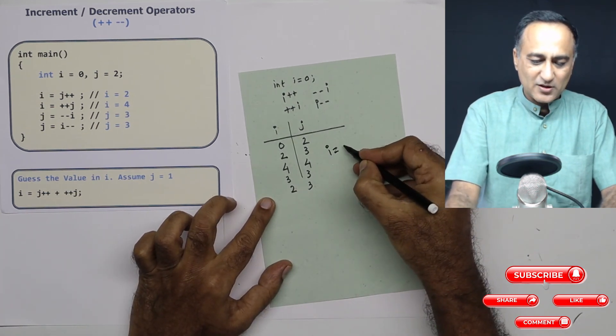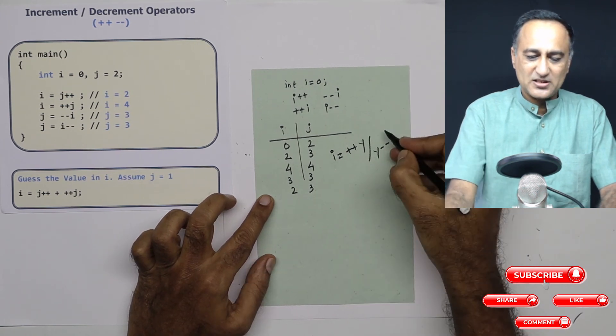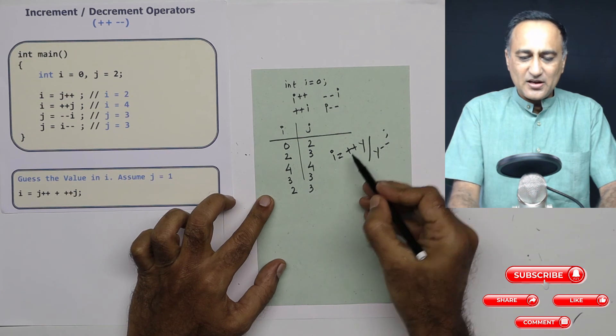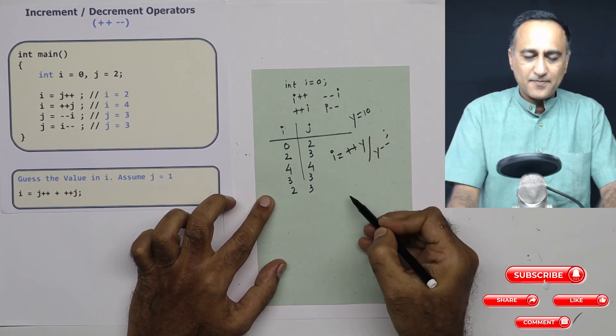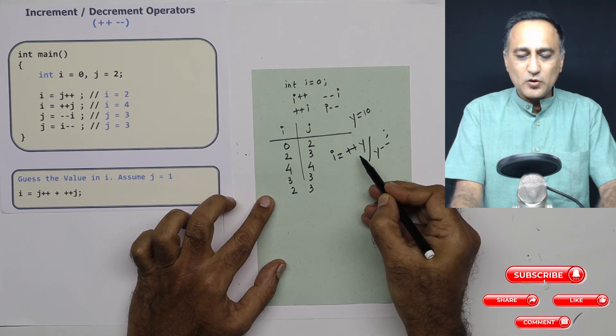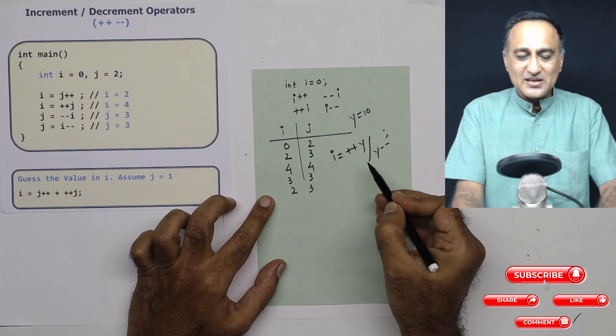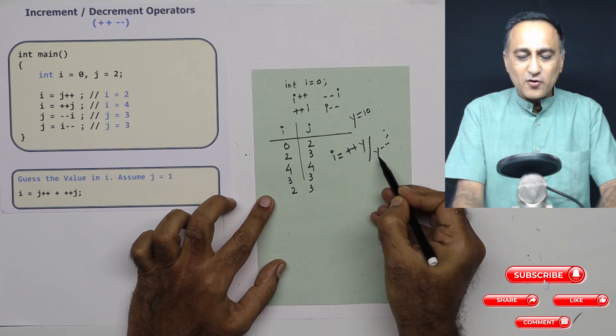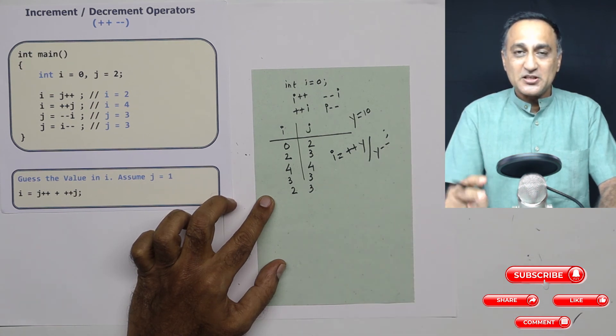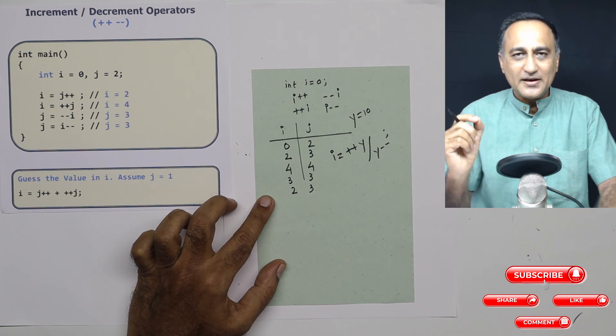Suppose I say i equals ++y and y--. Here, assume y was 10. You cannot be sure what the value of i will be because different compilers will process this differently. The reason is you've tried to change the value of y twice in the same expression. Therefore the behavior is undefined or compiler-dependent.